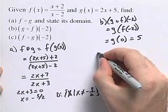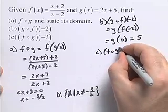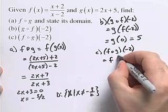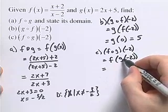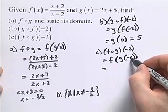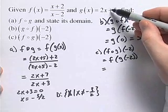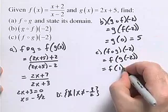For part (c), we want to find f of g of negative 2. So we first need to evaluate our function g when x is negative 2. Come up to our function g. 2 times negative 2 is negative 4, plus 5 gives us 1. So we really need to find f of 1.